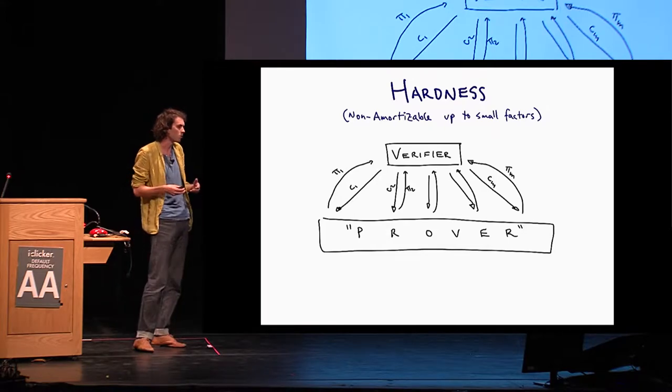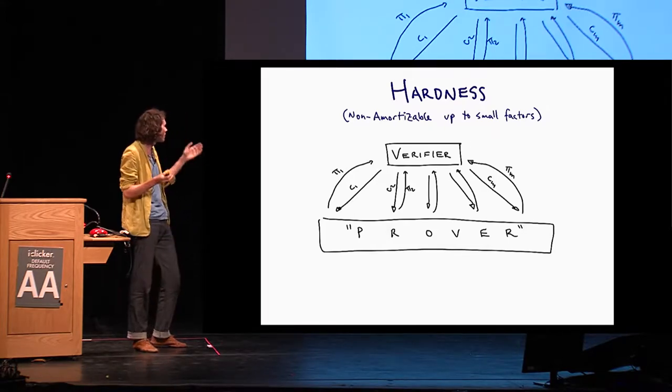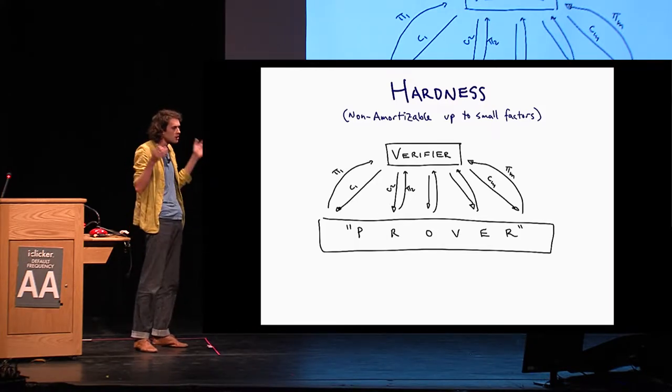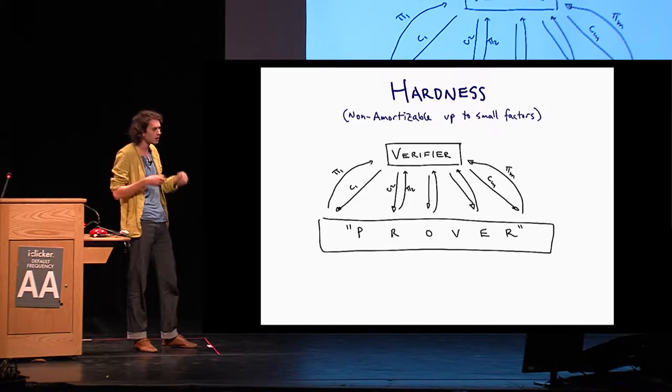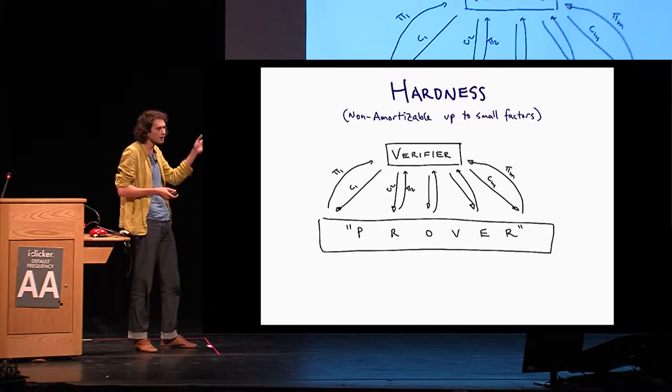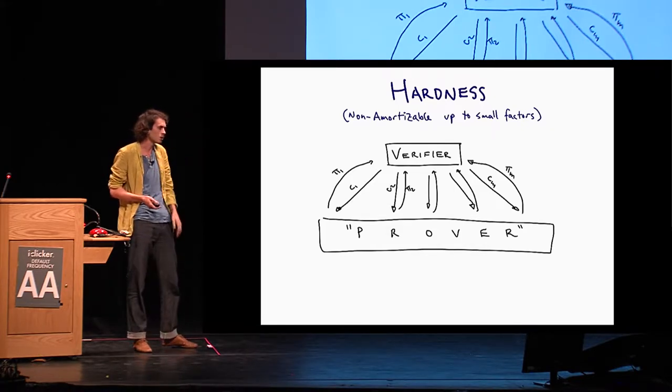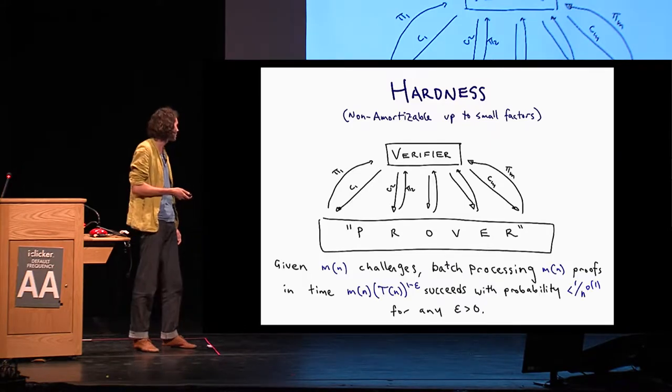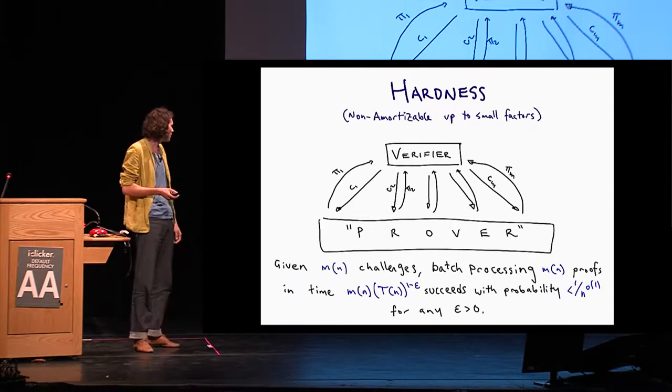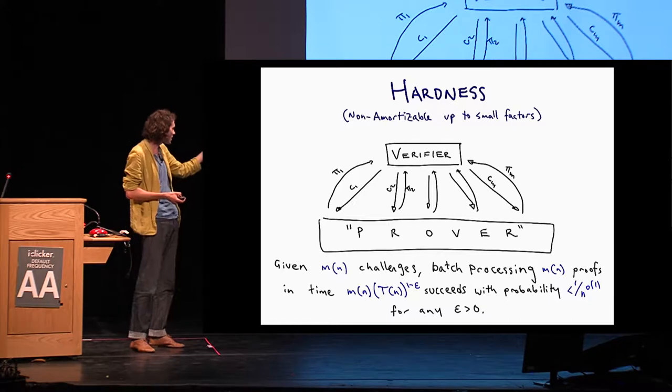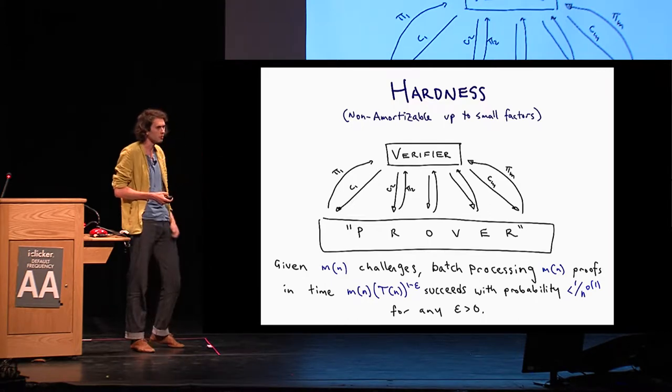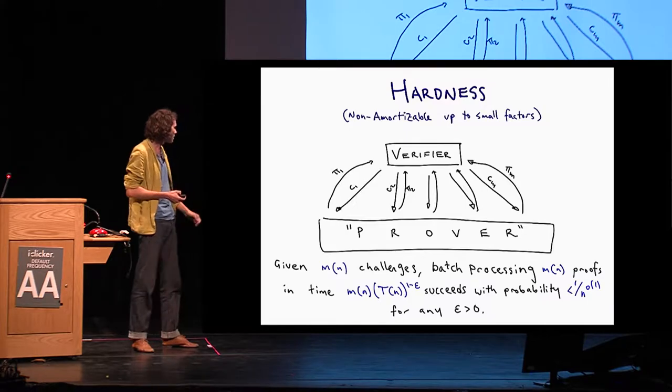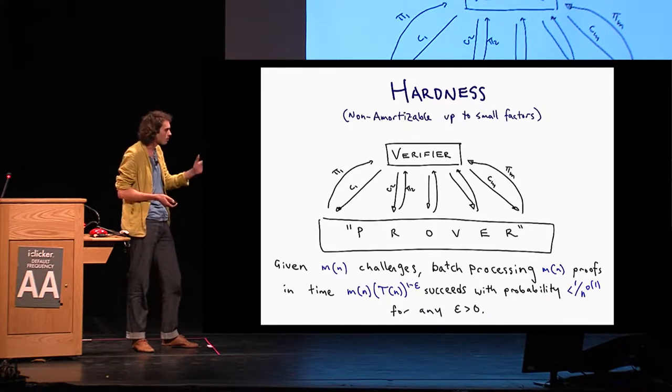But let's dive into this a little bit further. We want to consider a slightly more robust notion here where a verifier is interacting with a sort of mega prover. He sends this prover m challenges all at once, and the prover sends back m proofs in return. We want this prover to be forced to work. Basically, the best he can do is to produce proofs for each individual challenge one by one. That's captured by this statement: given m challenges, batch processing of m proofs in time less than m times t, shaving off an epsilon factor from this parameter t, succeeds with low probability.